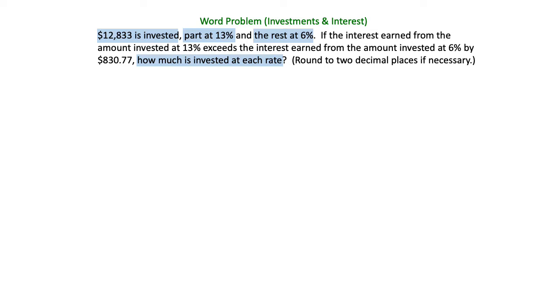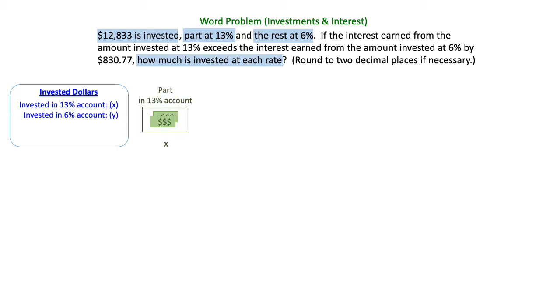We're going to think about invested dollars for our first equation. So we're going to think about the invested dollars in the 13% account. We're going to call those dollars X. And then whatever amount is invested in the 6% account, we're going to call that Y.